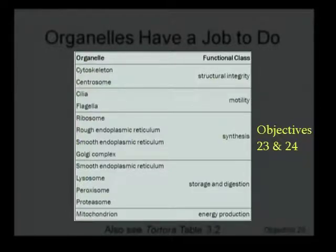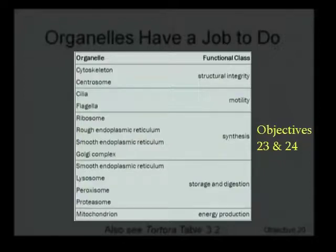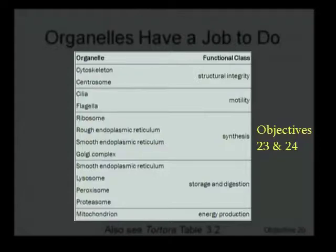The synthesis organelles — the ribosome, which we'll look at briefly now and in detail in module 5; rough endoplasmic reticulum, which is associated with ribosomes; smooth endoplasmic reticulum; and the Golgi complex — are all involved in synthesis and will be in objective 23. The Golgi complex will be considered twice: once briefly as part of the synthesis objective, and then in detail with its own objective 24.